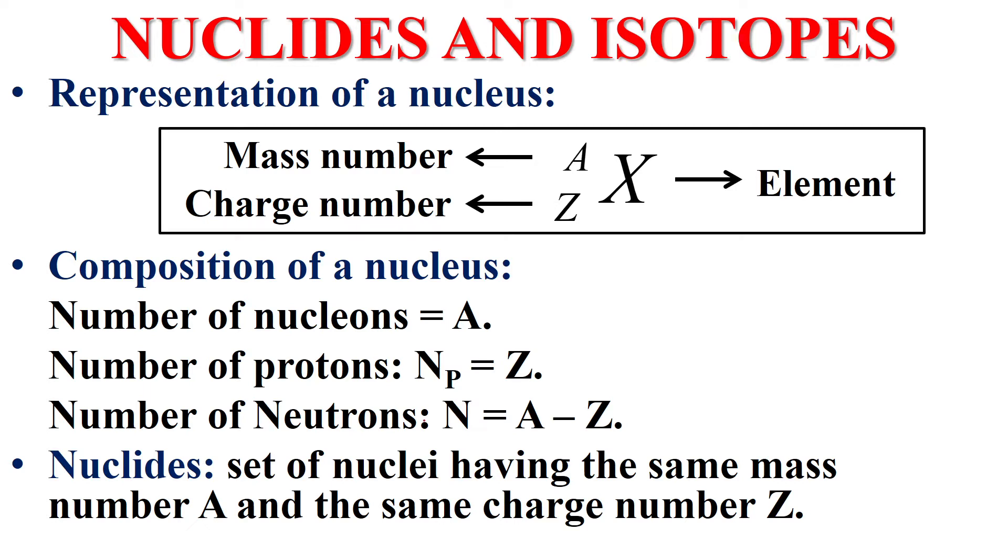So in order to determine the number of neutrons in a given nucleus, we use A minus Z. This is the first objective: to determine the composition of a nucleus.